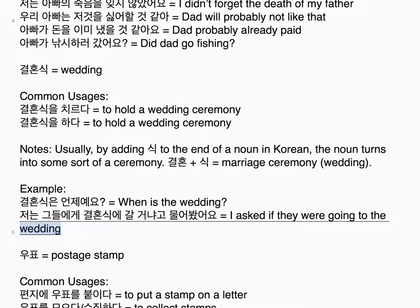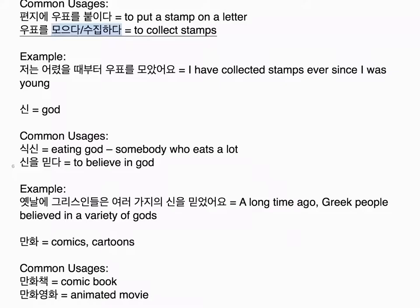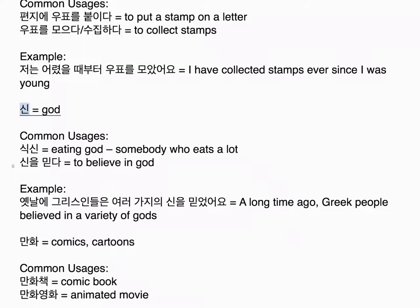우표 equals postage stamp. Common usages: 편지에 우표를 붙이다 — to put a stamp on a letter; 우표를 모으다/수집하다 — to collect stamps. Example: 저는 어렸을 때부터 우표를 모았어요 — I have collected stamps ever since I was young.